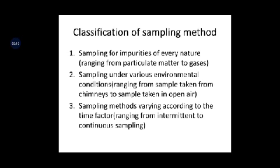Sampling methods also vary according to the time factor — specifically how long the sampling duration is, ranging from intermittent to continuous sampling. For example, continuous sampling may be essential for an industrial area where manufacturing activities are ongoing 24/7 and are continuously causing air pollution. Intermittent sampling may apply where 24/7 emission of gaseous pollutants or particulate matter is not the case, and we need to calculate the extent of pollution only within a particular time frame.